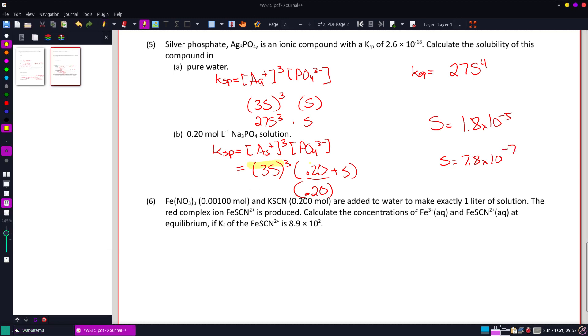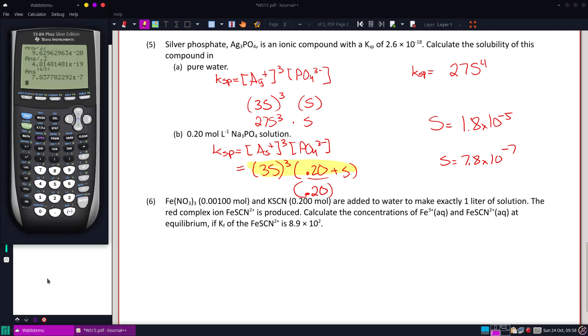On this problem, you could have solved that thing fully and I'll show you how I do that with the calculator here if I wanted to get it a little bit more accurate. So I'm going to have the 3x cubed times the 0.2 plus x and then I'll move my Ksp to the side minus 2.6 times 10 to the negative 18th. And theoretically, I can graph this.